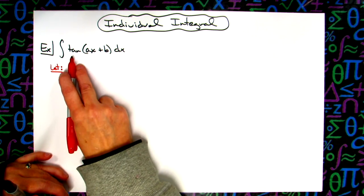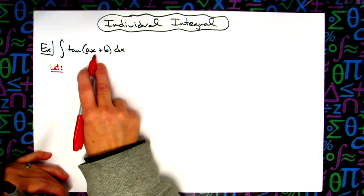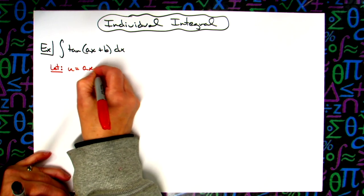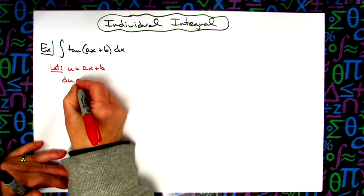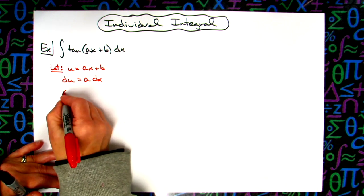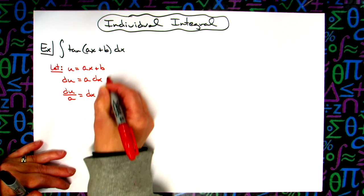We're going to start with the tangent of ax plus b, and we're going to let our u be that inside part. So let u be ax plus b. Taking the derivative of both sides, we'll have du equals a dx. Solving for dx, we have du over a equals dx.